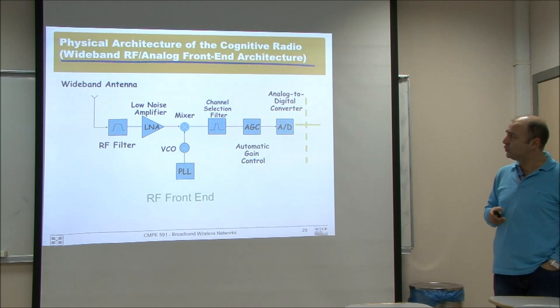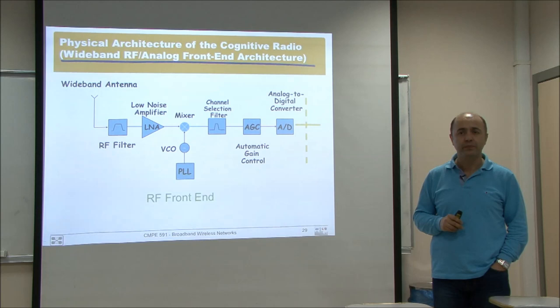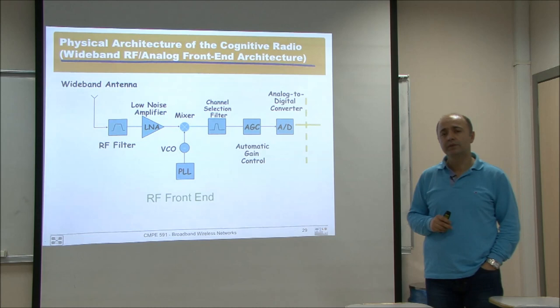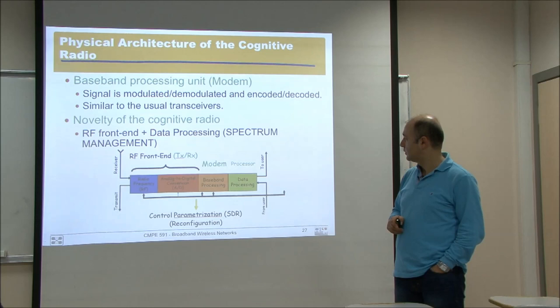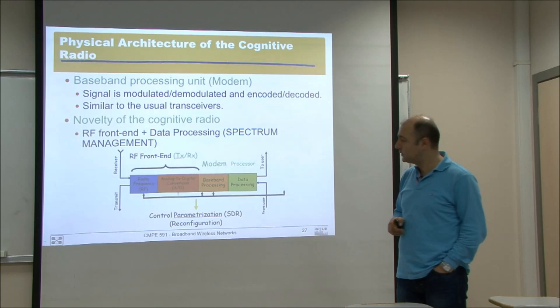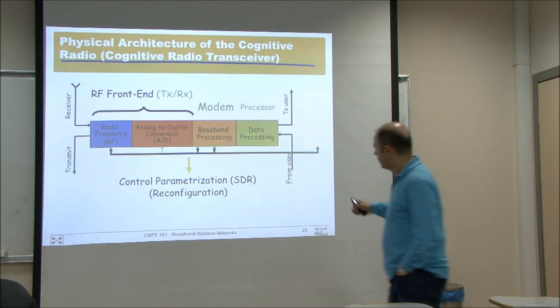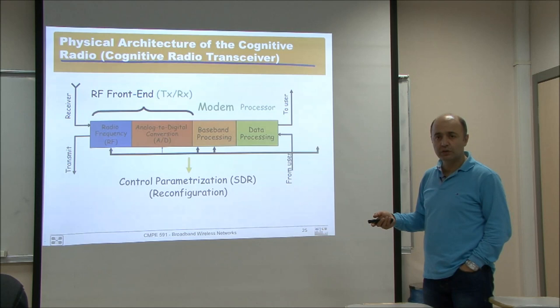Let me stop here and next time continue from this point, because I don't want to break the discussion. I would like to cover it in one shot. Any questions? From the previous figure, it looked like the control parameterization operation and the data communication look like two separate but related operations that may be running in parallel. Right — this is the larger view of it.